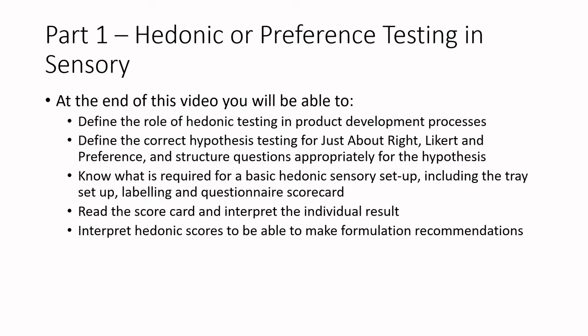This is a part one video. We have a part two where we'll talk about data analysis techniques. At the end of this video, you'll be able to define the role of hedonic testing in product development processes, define correct hypothesis testing for just about right, Likert, and preference methods, and structure questions appropriately. We'll know what's required for a basic hedonic sensory setup including tray setup, labeling, and questionnaire scorecard, and how many people are typical for each type of analysis.